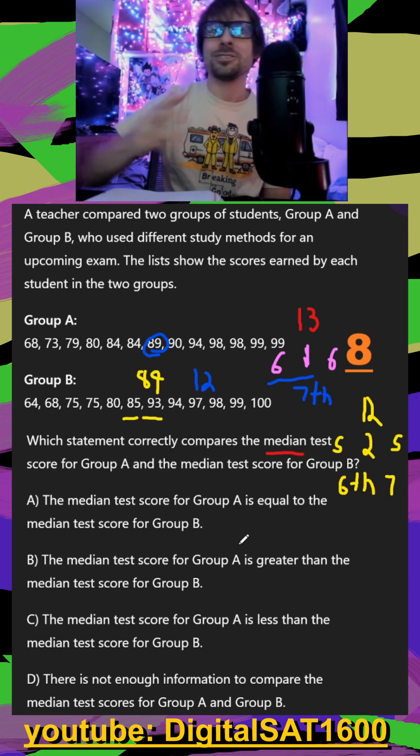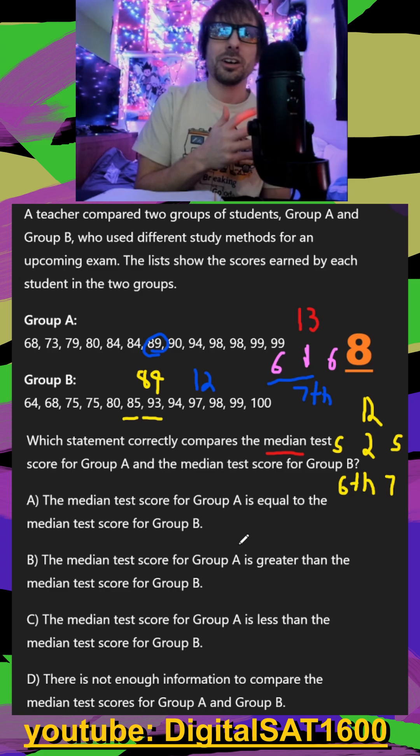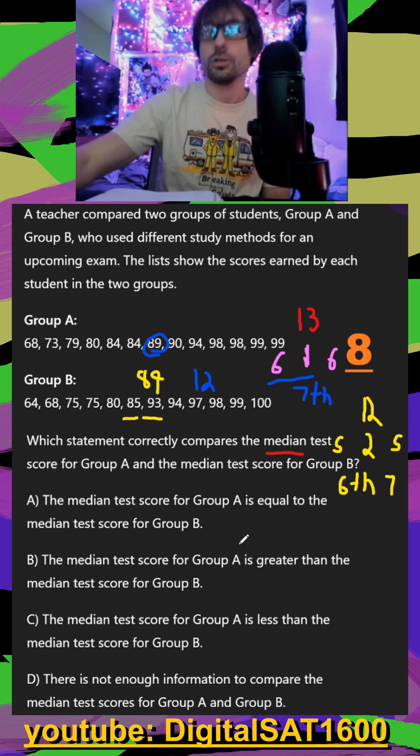So finally, our answers are probably like one's bigger, one smaller, maybe one's not enough info, and then they're equal. So in A, I see right off the bat, the median of A is equal to B. Just to double check - greater, less than, and there's not enough info. So it's just going to be A here.